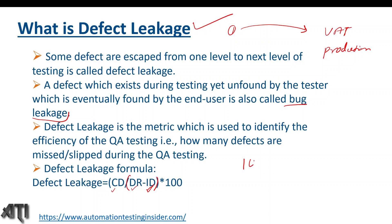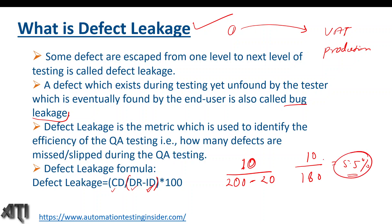For example, let's say we found 10 defects in production or during UAT testing. We divide that by 200 defects raised by the testing team, minus 20 invalid defects — so that's 10 divided by 180, which comes out to around 5.5 percent. That is the defect leakage percentage.